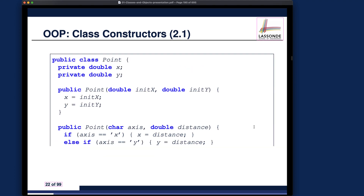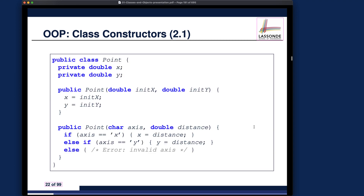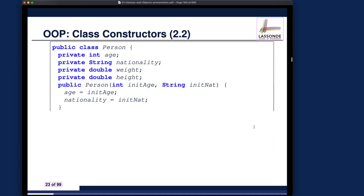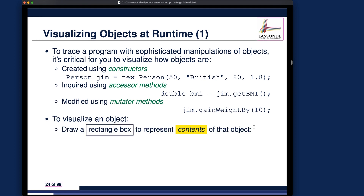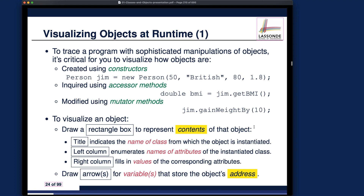There's also an example about defining a constructor for a two-dimensional points class. This slide is the starting point for how we can visualize objects — a very important skill. Whenever we discuss advanced concepts, we always need to visualize how objects are created and manipulated at runtime. This is a fundamental skill I expect from the first year; if you haven't built it, now is the time to learn it.